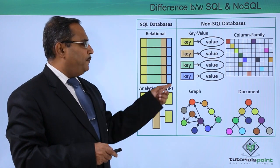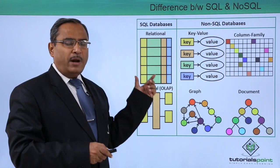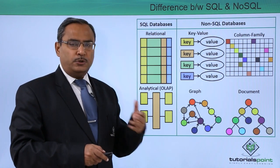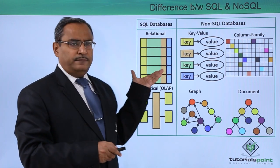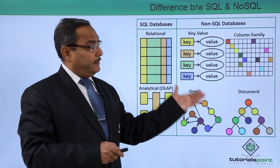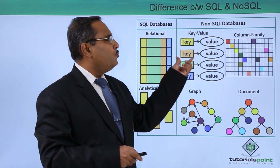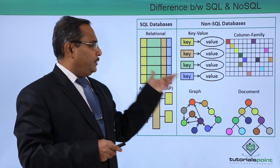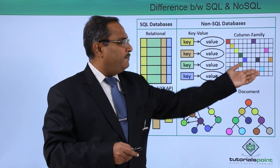An SQL relational database is represented in the form of tables with multiple rows and columns. Each row is known as a tuple or record, and the columns represent attribute values. In NoSQL databases, a table is known as a collection, and a collection has multiple documents. Documents are represented in the form of key-value pairs — against one key we can have a single value or multiple values. The equivalent of fields and attributes in SQL is referred to as a column family in NoSQL.